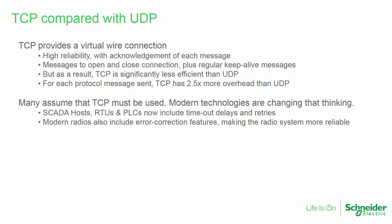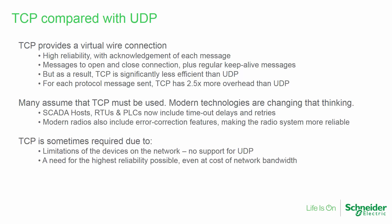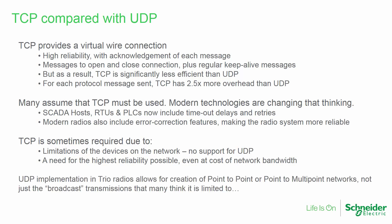Many system designers assume that TCP simply must be used, but modern technologies are slowly changing that thinking. SCADA hosts, RTUs, and PLCs now all include their own reliability-improving features such as time-out delays and retries. Modern radios such as TRIO Q and J also include error correction features, making the radio system more reliable. TCP will sometimes be required, perhaps due to limitations of the devices on the network — for example, no support for UDP — or perhaps a customer's demand for the highest reliability possible, even at the cost of network bandwidth. UDP implementation in TRIO J and Q allows for creation of point-to-point or point-to-multipoint networks, not just the broadcast transmissions that many think it is limited to.